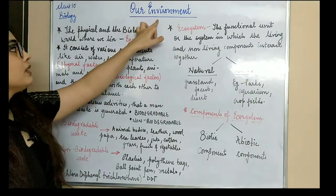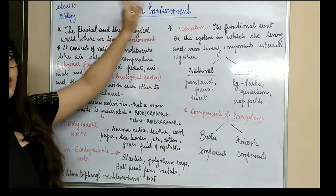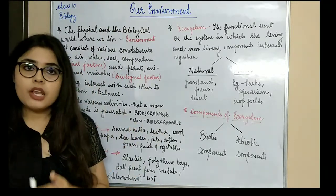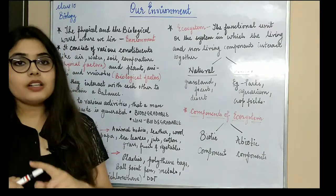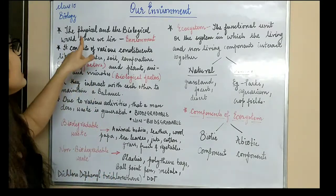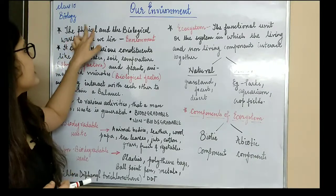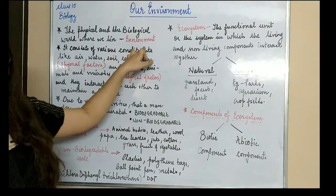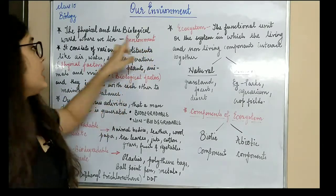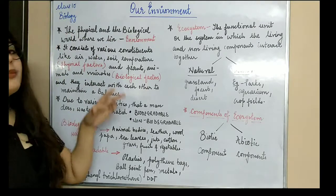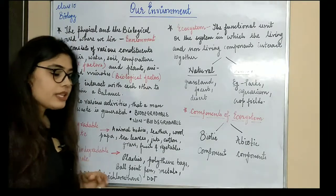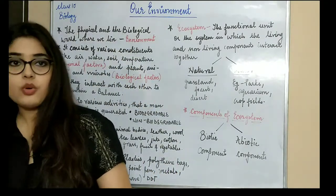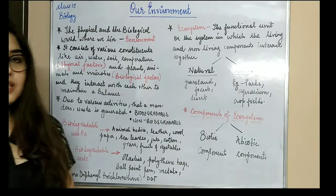So let's get started. The first heading is 'Our Environment.' What is it saying? Our environment means the environment in which we live. Now what do you mean by environment? Basically, environment is an area or place where the physical and the biological attributes are there. In other words, the definition of environment is: the physical and the biological world where we live.